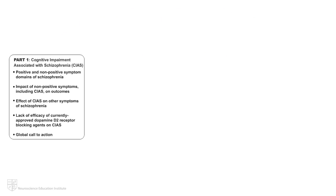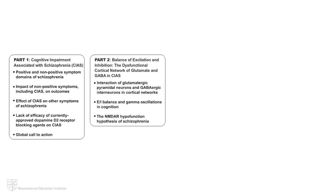Here, in Part 1 of this four-part Mechanism of Action animation series, we will discuss how detrimental CIAS resulting from cortical network dysfunction can be to the overall well-being of patients with schizophrenia. In Part 2, we will take a closer look at the cortical network of excitatory glutamatergic pyramidal neurons and inhibitory GABAergic interneurons, and see how hypofunctional N-methyl-D-aspartate receptors (NMDAR) on GABAergic interneurons contribute to the imbalance of excitation and inhibition that results in an asynchronous network and CIAS.